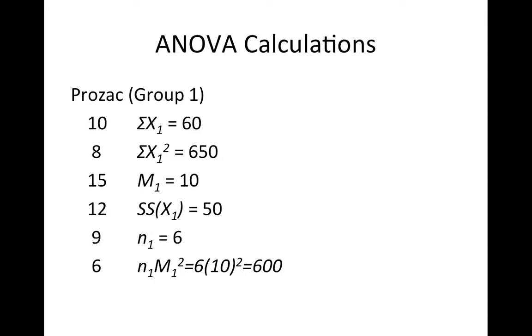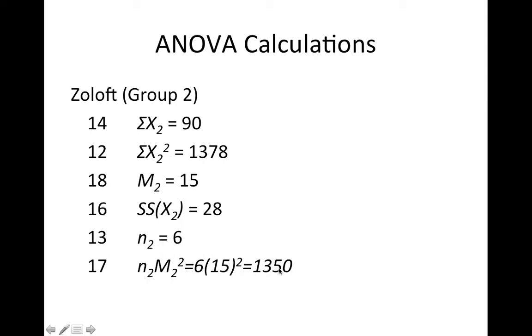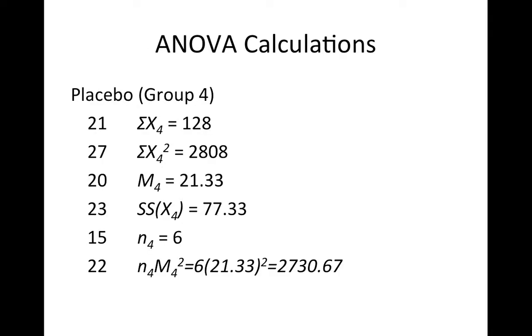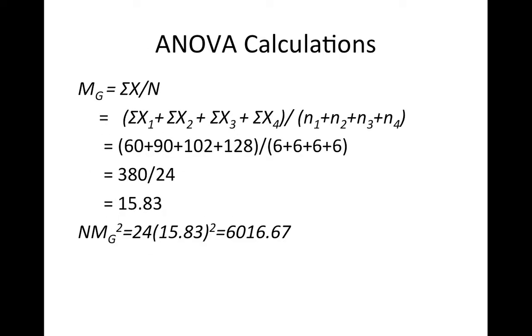So to start with, the Prozac group, I've just done these calculations, and then I've also calculated n times the mean of that group squared. I did it for Zoloft, I did it for Elavil, I did it for placebo. Calculated the grand mean by just adding up all the scores and dividing by the number of scores. That's equal to 15.83. N times the grand mean squared is just 24. I have 24 total observations, times the grand mean squared is equal to that term.